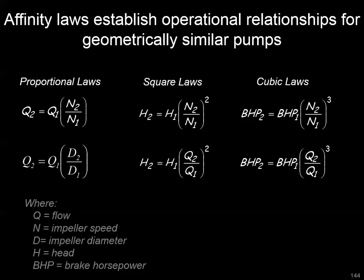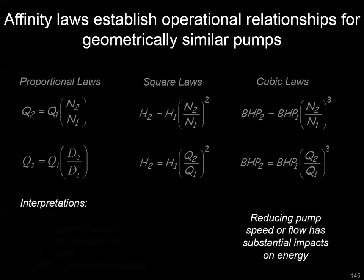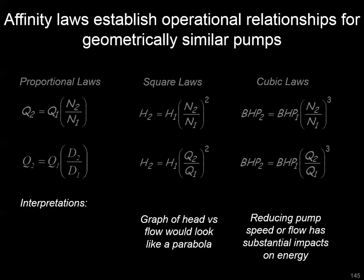As an example, if you were in an instance where you could reduce your flow by half, the resultant brake horsepower would be diminished by half of a half of a half — or one-eighth of the original brake horsepower. So there are significant opportunities for energy savings based on this cube law. Going back to the square law and the relationship between head and flow, if we were able to chart these two variables, we would expect their relationship to look like a parabola shape.